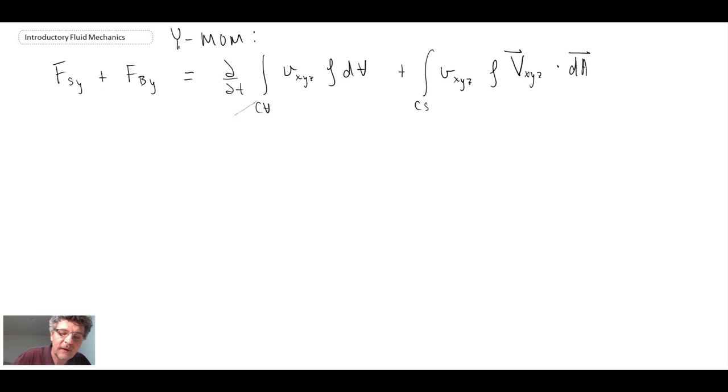Now with this, again steady flow, neglect body forces. Notice that we do not have a component on control surface one, and that is because their control surface one is in this direction, and consequently there is no component in the y direction, and that's why we don't have to worry about it.